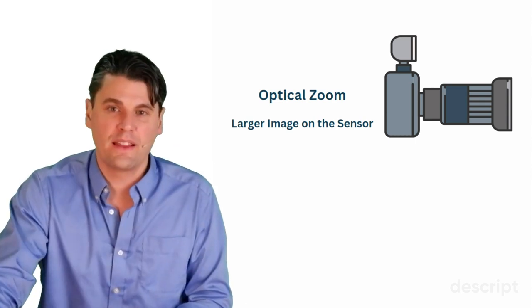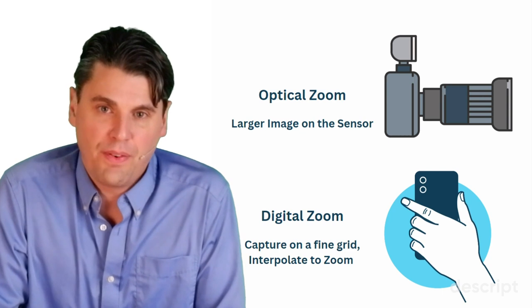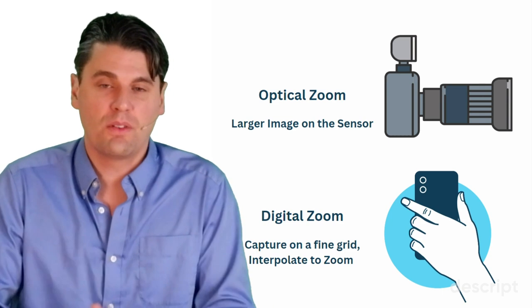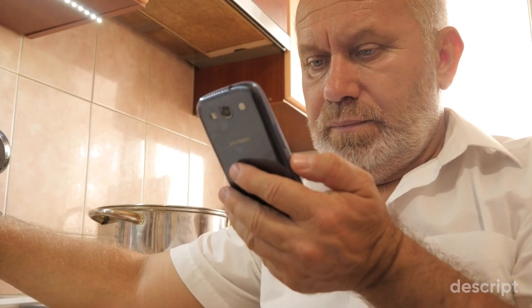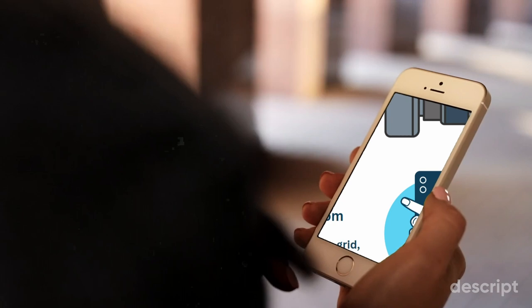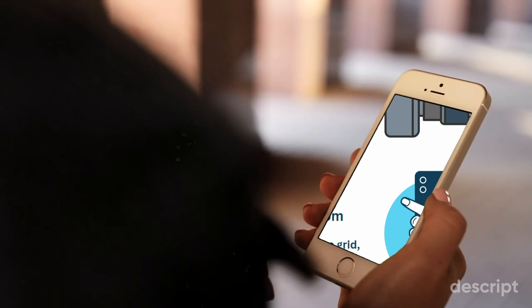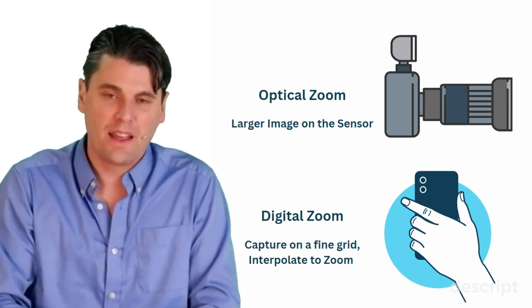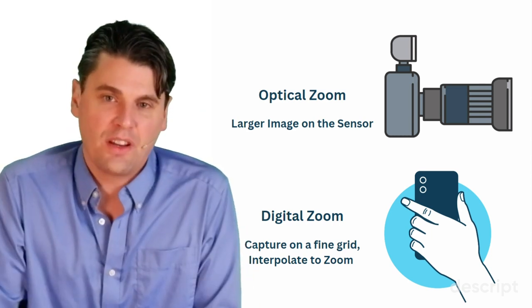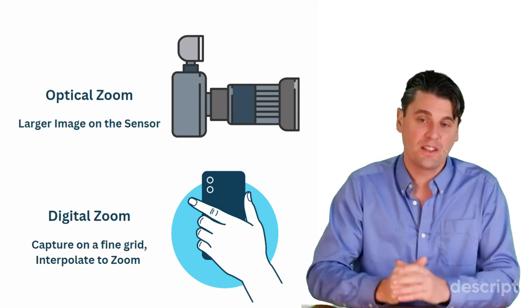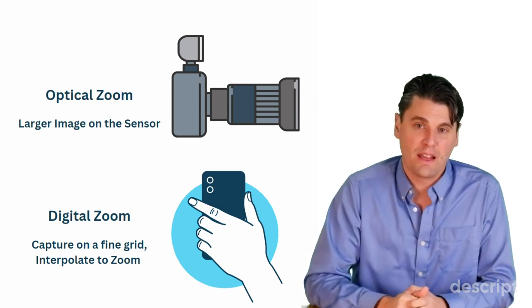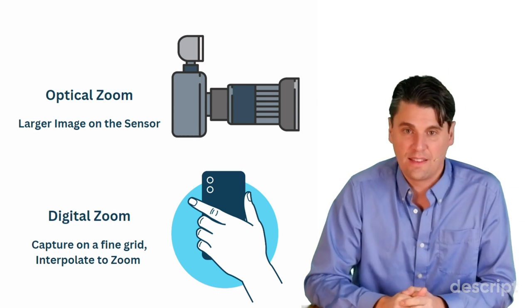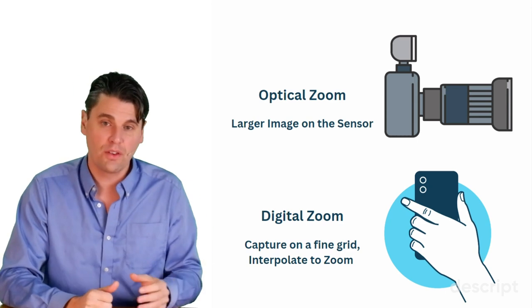Nowadays, with digital sensors being so much better, if we have really fine sampling in our sensor, we can actually use digital zoom fairly effectively. When this first came out it wasn't very good, but nowadays on modern iPhones you can do the digital zoom — you're zooming in, and it's not changing the optics on the system, but it's actually changing the sampling of the matrix from the capture on the image sensor to the actual image that it's going to save. That's the difference between optical and digital zoom.